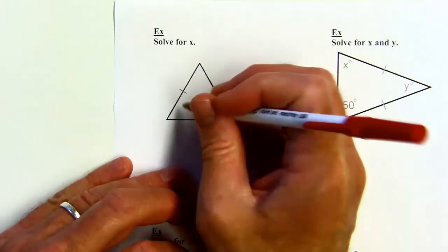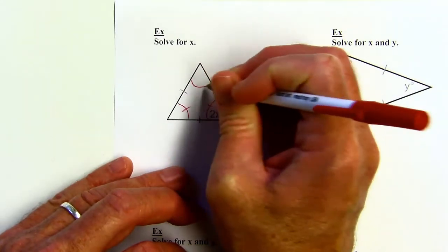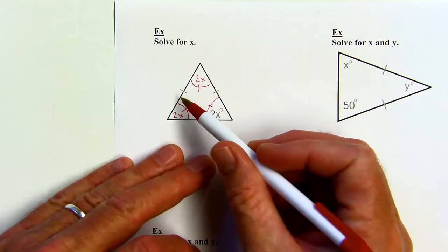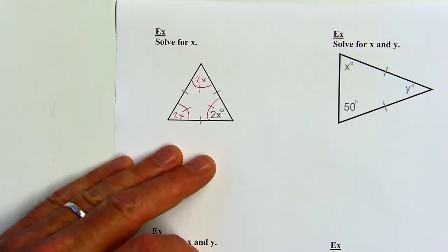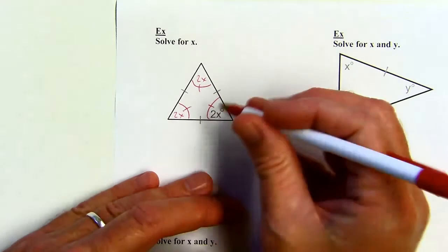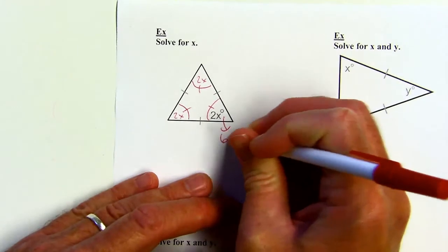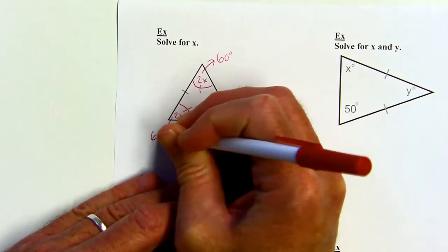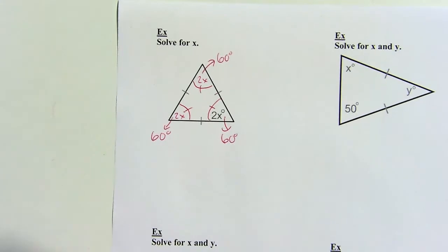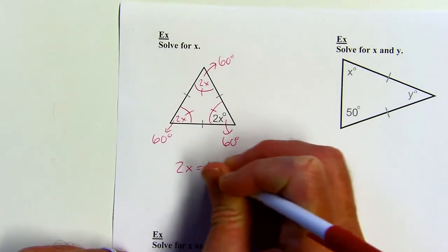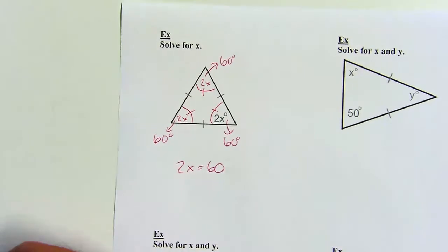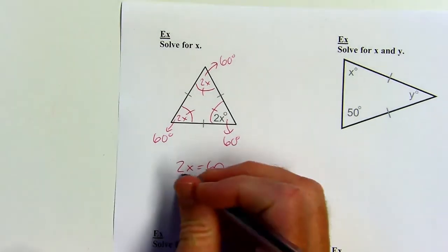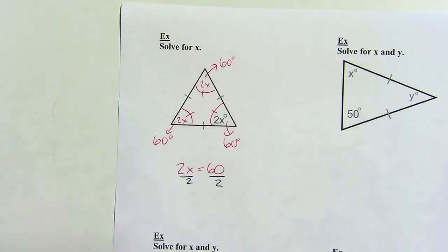All three sides are congruent, which means all three angles are congruent. So all of these are going to be 2x. You could say 2x plus 2x plus 2x equals 180, but since I know an equiangular triangle must have 60 degree angles, I can just say 2x equals 60. Dividing by 2, x equals 30.